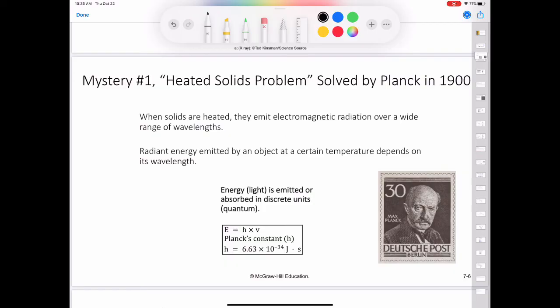Max Planck solved the problem with an assumption that departed drastically from accepted concepts. Classical physics assumed that atoms and molecules could emit or absorb any arbitrary amount of radiant energy. Planck said that atoms and molecules could emit or absorb energy only in discrete quantities like small packages or bundles. Planck gave the name quantum to the smallest quantity of energy that can be emitted or absorbed in the form of electromagnetic radiation. The energy E of a single quantum is given by this formula shown right here. E is equal to H times nu, where H is called Planck's constant and nu is the frequency of radiation. The value of Planck's constant is 6.63 times 10 to the minus 34 joules times seconds.